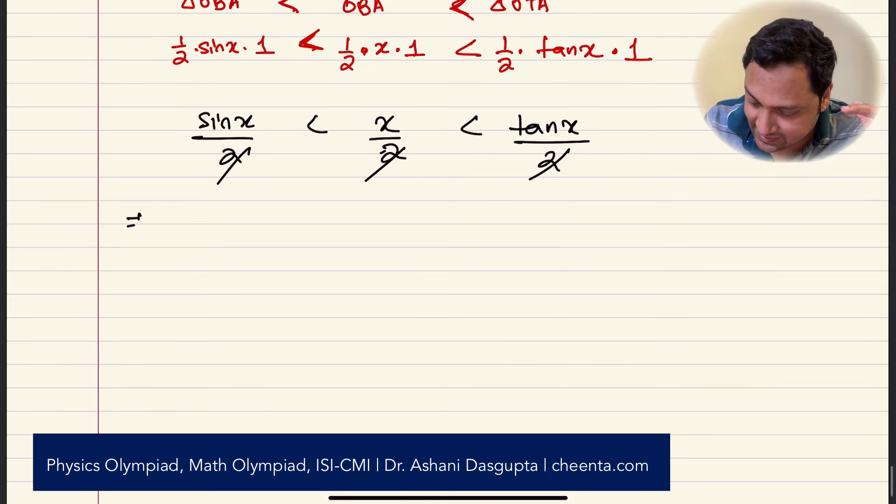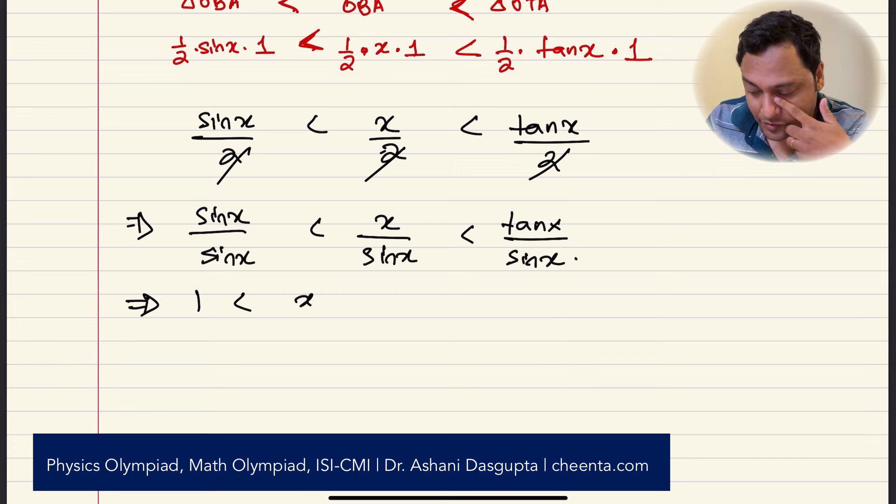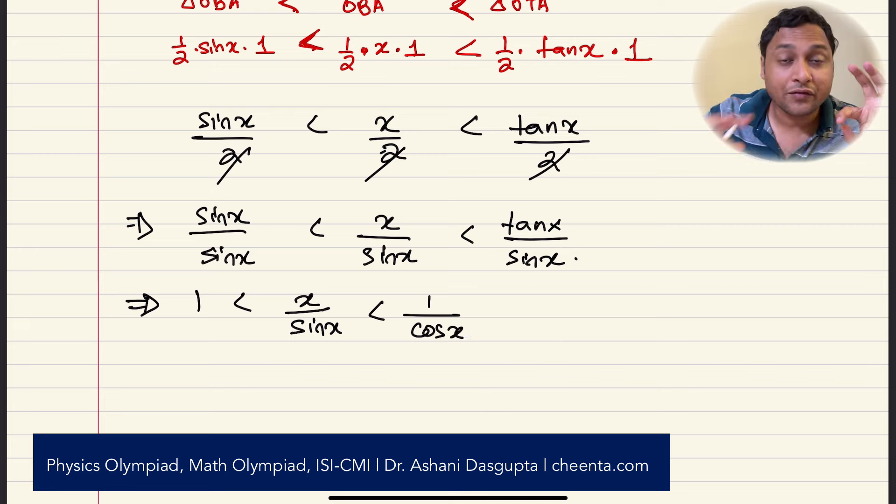We will stay above the line OA in the counterclockwise direction. Since x is positive, or sine x is positive, we can divide all along by sine x. And the inequality will remain the same. So what we'll get is sine x over sine x, less than x over sine x, less than tan x over sine x. So what we'll get is 1 is less than x over sine x, is less than 1 over cos x.